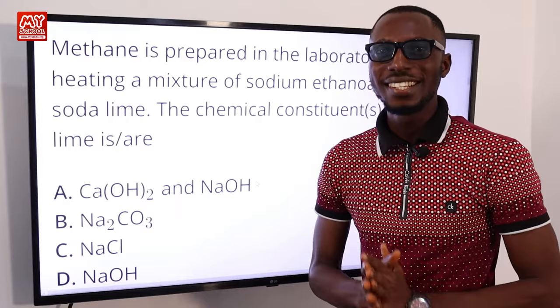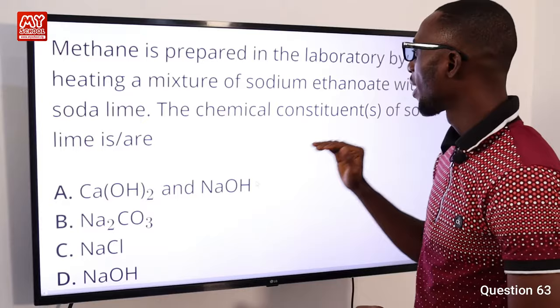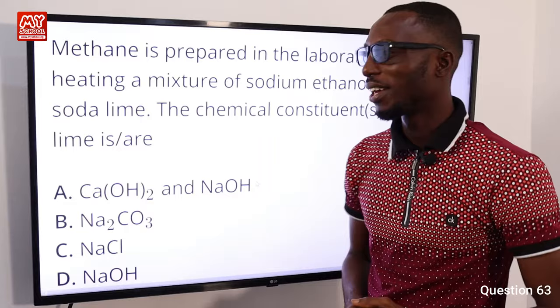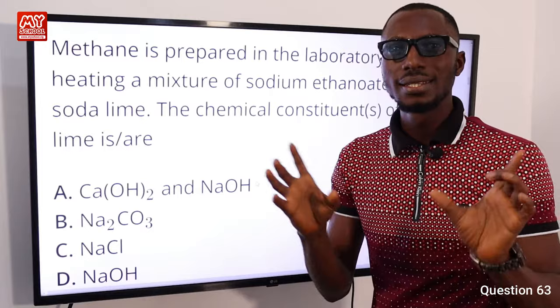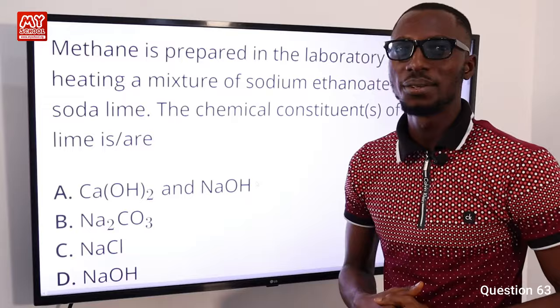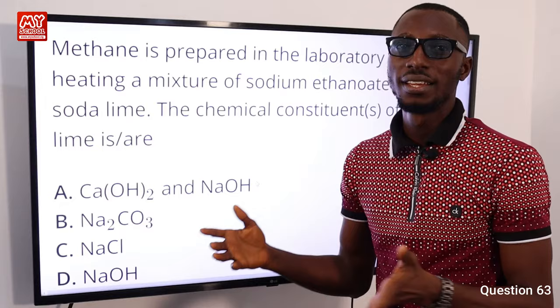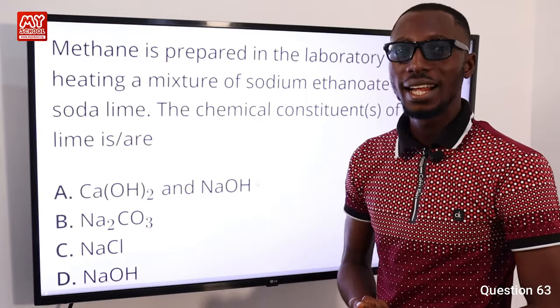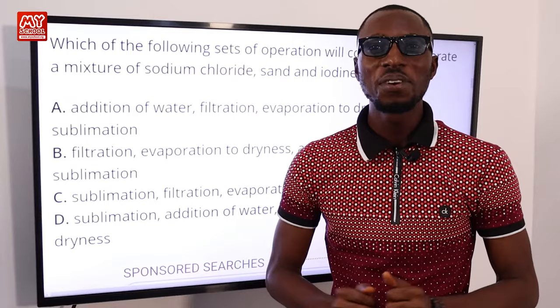Question 63: Methane is prepared in the laboratory by heating a mixture of sodium methanate with soda lime. What is the chemical constituent of soda lime? Soda lime is used to remove CO₂ from the atmosphere, as in submarines. Its components are caustic soda (sodium hydroxide, NaOH) and slaked lime (calcium hydroxide, Ca(OH)₂). Option A is correct.